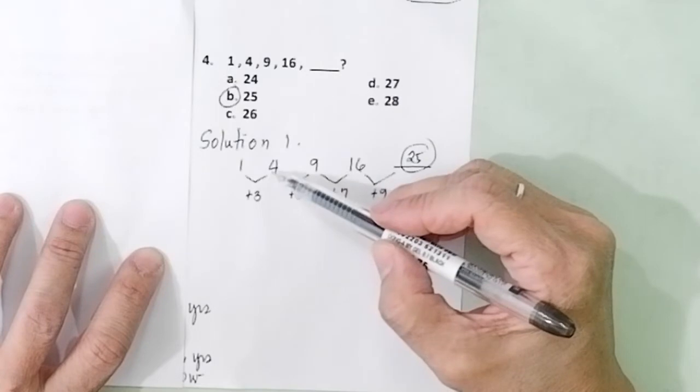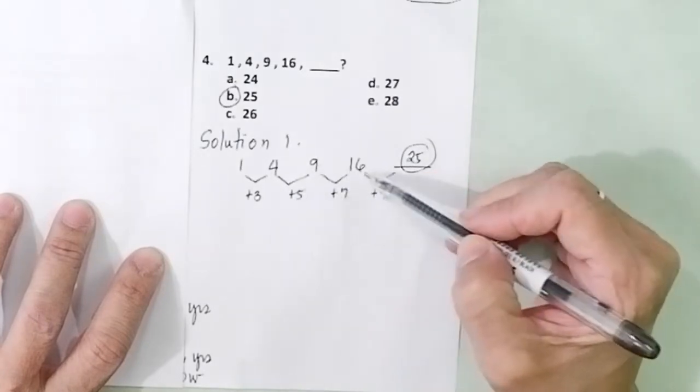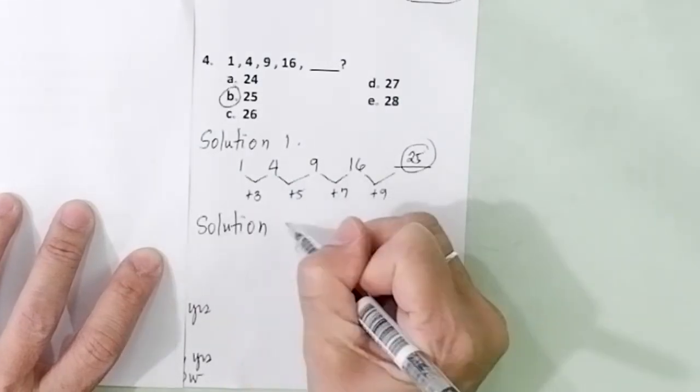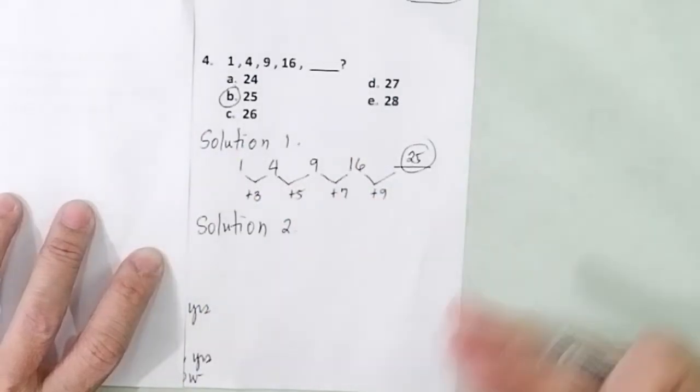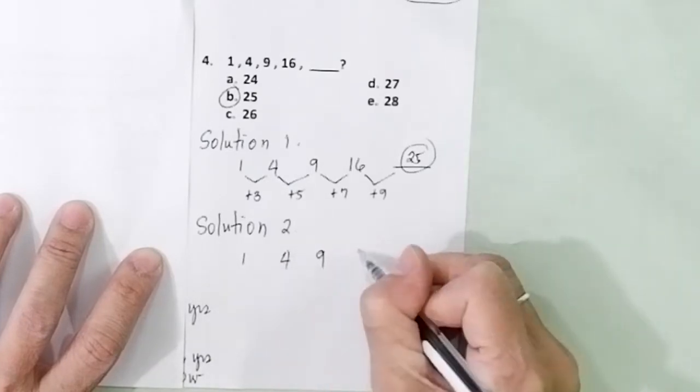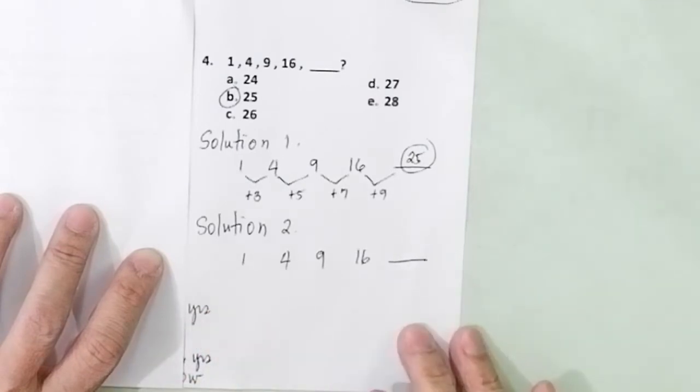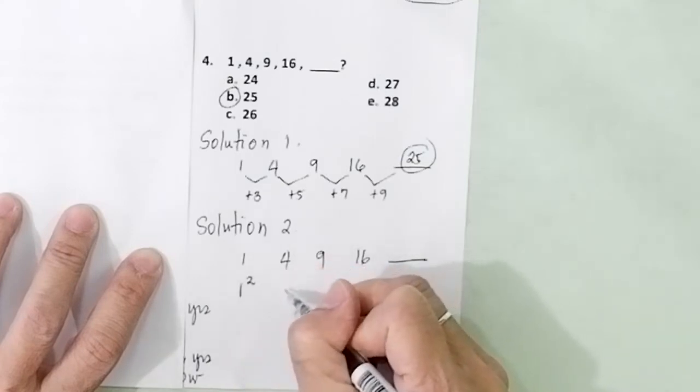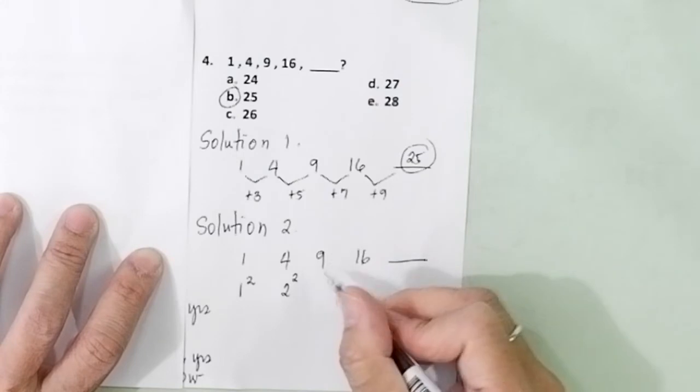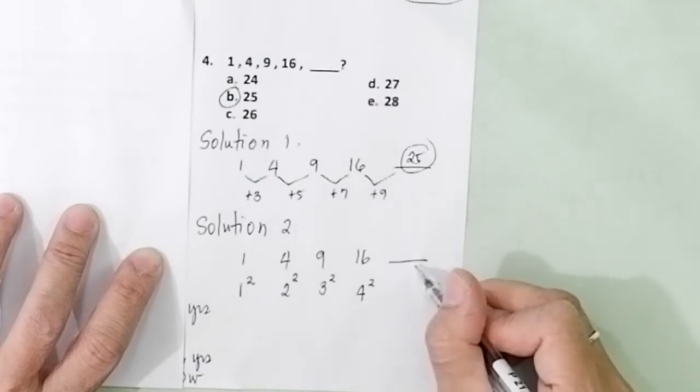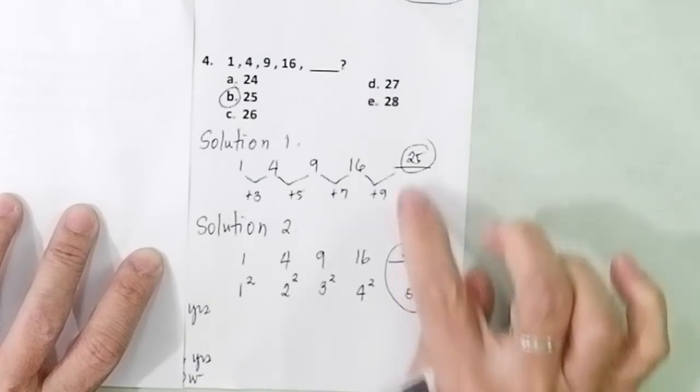I can give you another solution. In patterns like this, there are different ways on how you can come up with the answer. Other solution is this. Take a look at 1, 4, 9, 16, blank. What kind of numbers are they? They are squares. 1 is the square of 1. 4 is the square of 2 or 2 times 2. 9 is the square of 3 or 3 times 3. 16 is the square of 4 or 4 times 4. So this is 5 square. And 5 square is 25. You still get the same answer, 25.